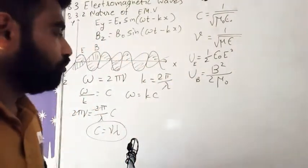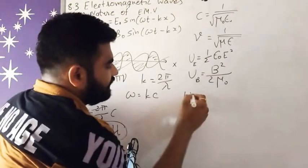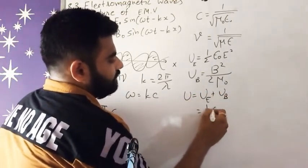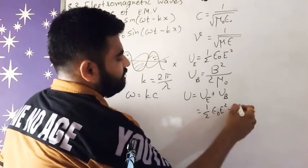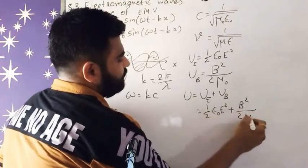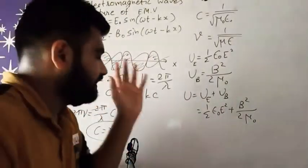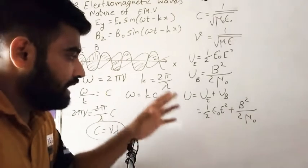So total energy in this electromagnetic wave, that is U = U_E + U_B. So ½ε₀E² + B²/2μ₀. So that is how we can find this total amount of energy in these electromagnetic waves.